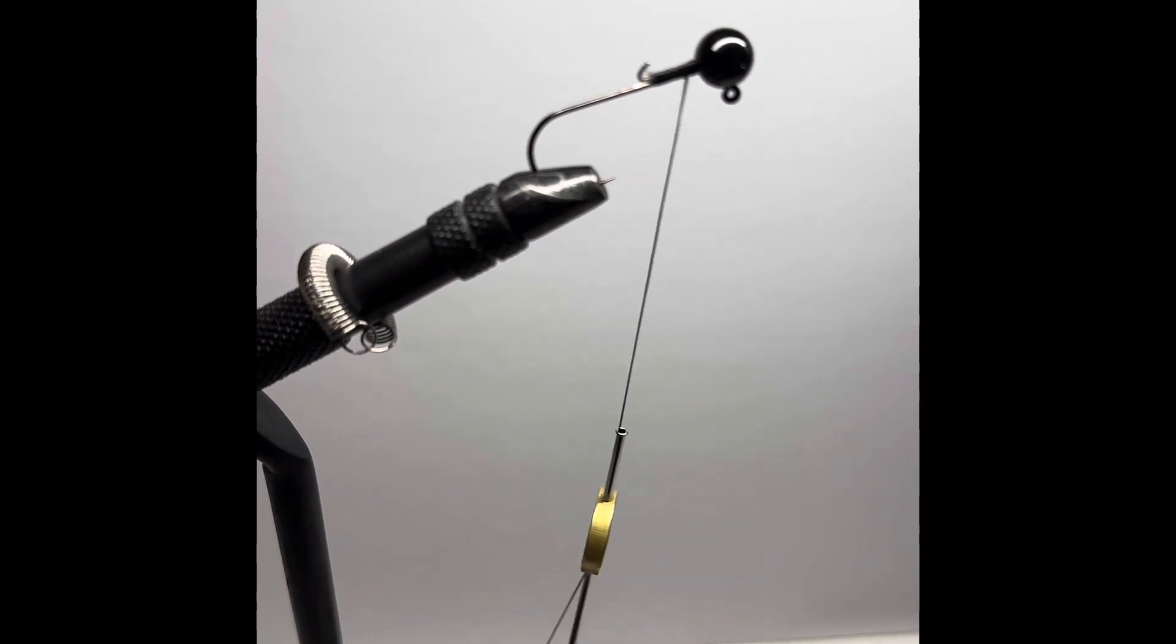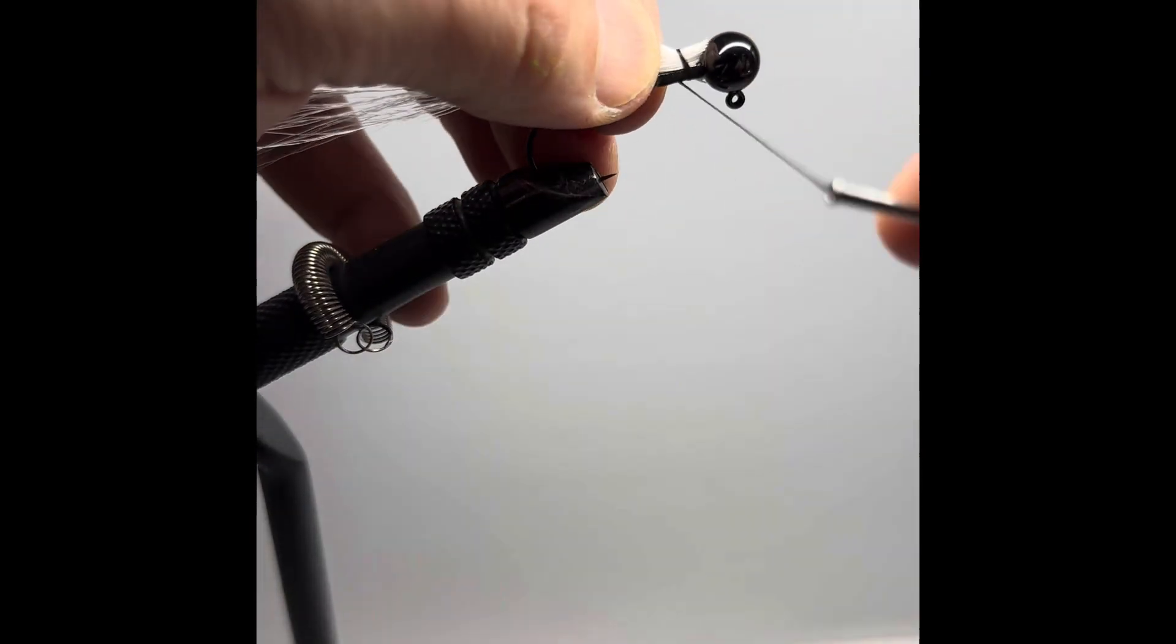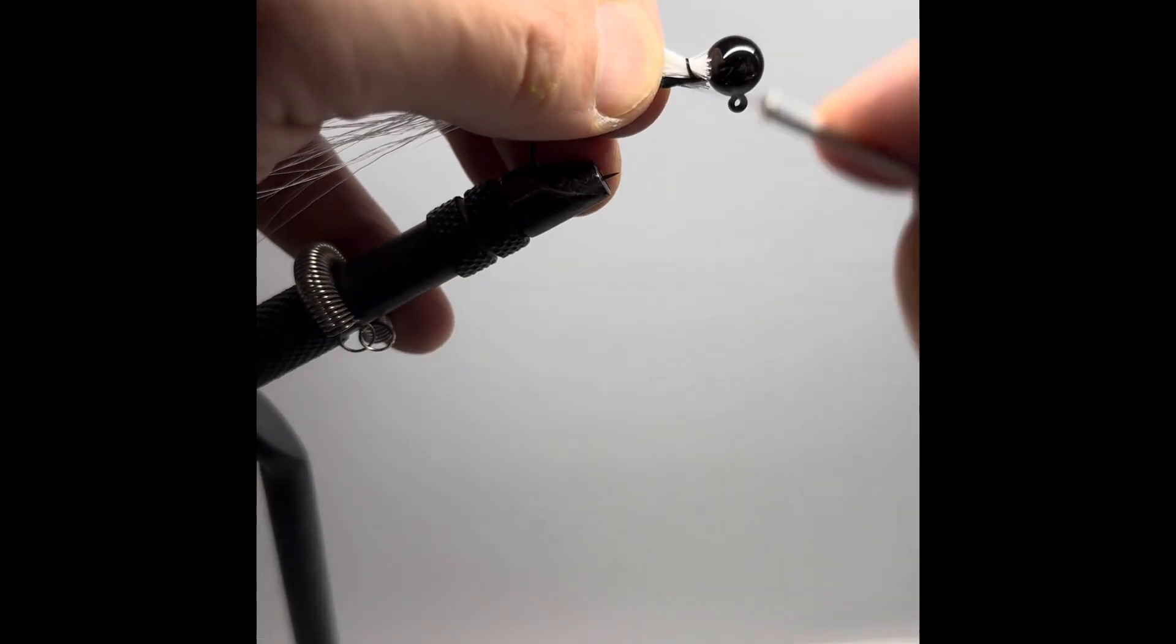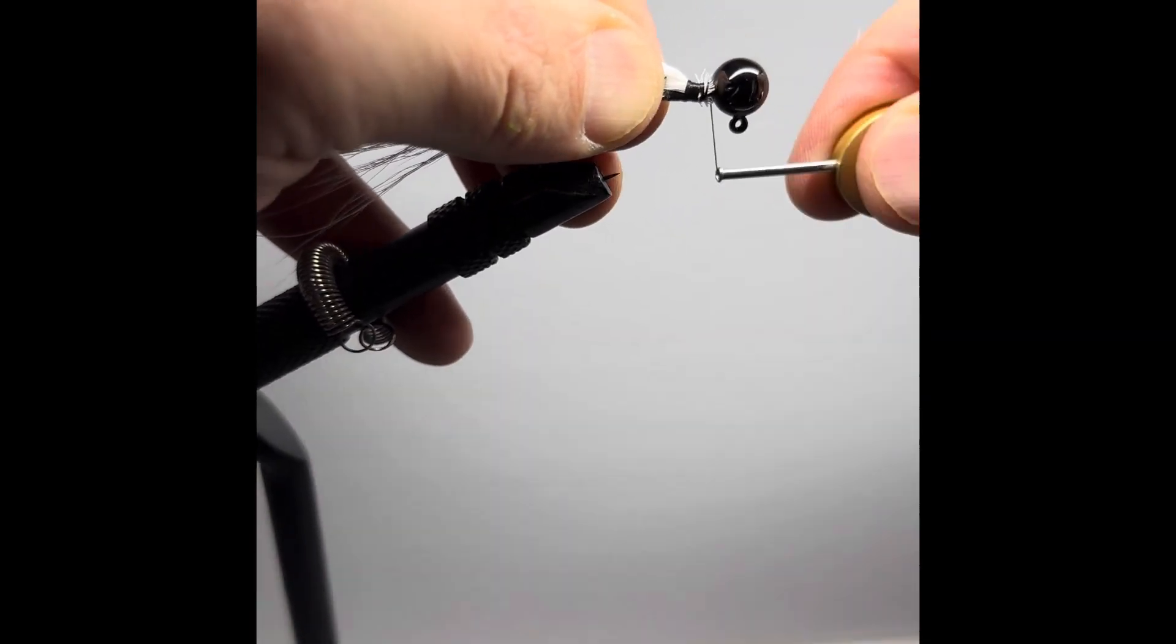Alright, we're going to start off with a little bit of bucktail here, cutting off a piece. And then we're going to pinch it and fan it out and get rid of those guard hairs. Starting off with the white, a few loose wraps just to get it to stay in place and then to tie it down and really lock that in.